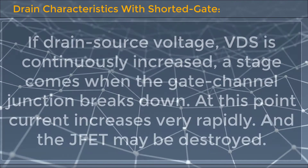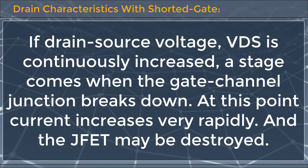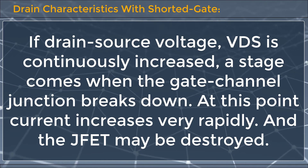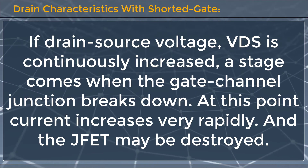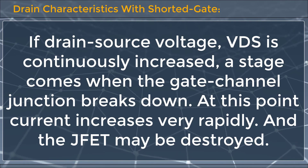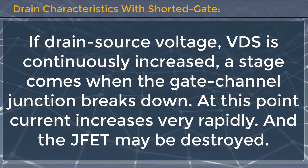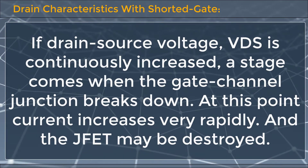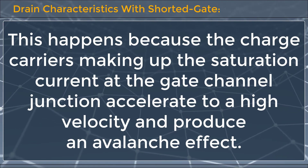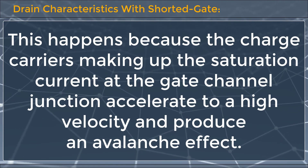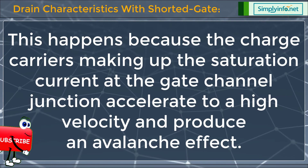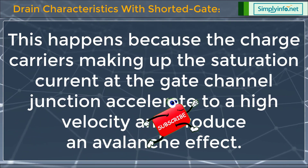If drain source voltage VDS is continuously increased, a stage comes when the gate channel junction breaks down. At this point, current increases very rapidly and the JFET may be destroyed. This happens because the charge carriers making up the saturation current at the gate channel junction accelerate to a high velocity and produce an avalanche effect.